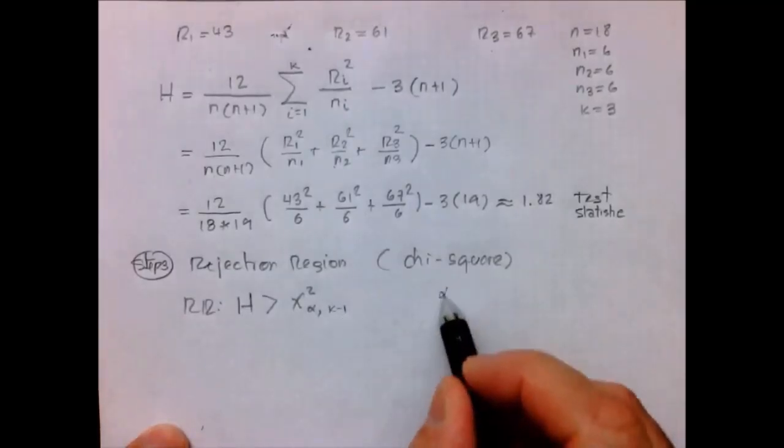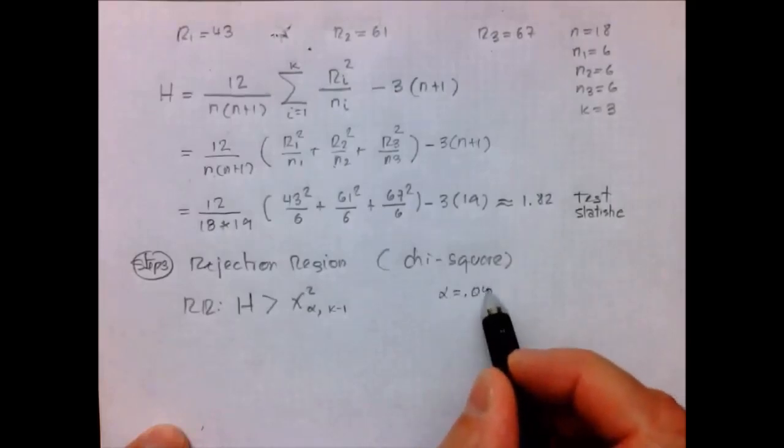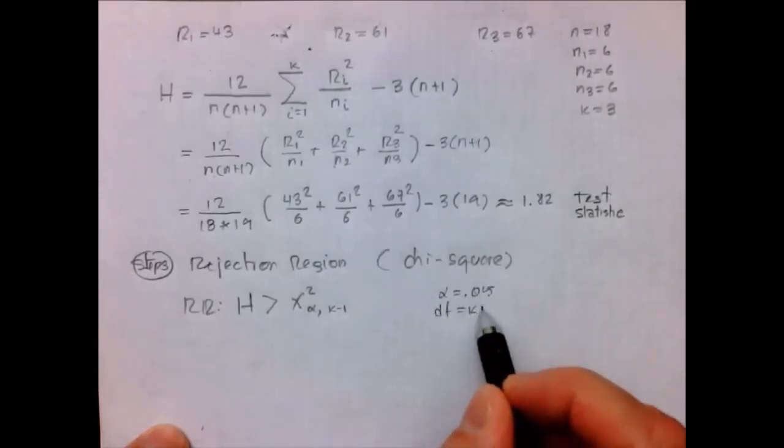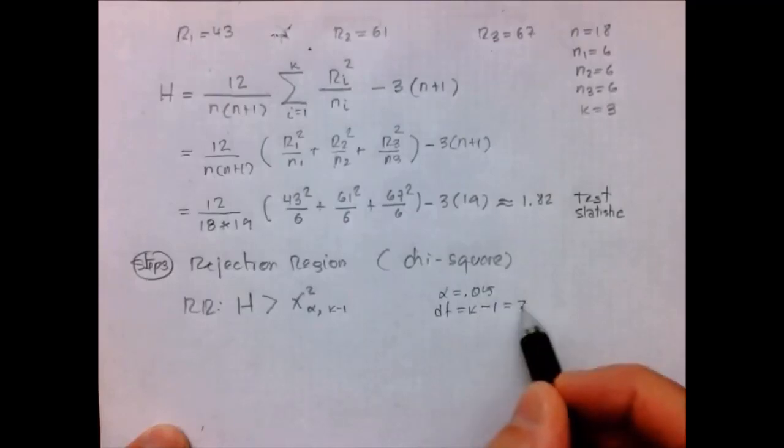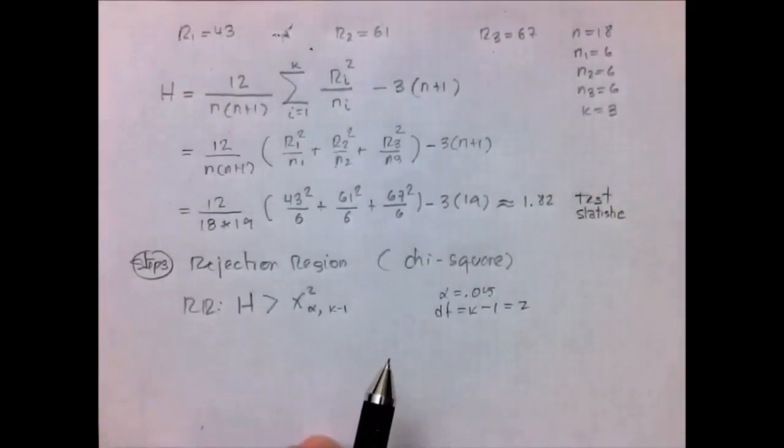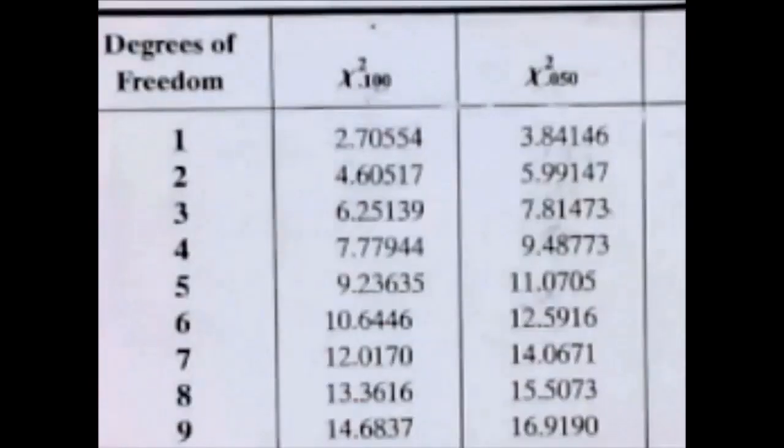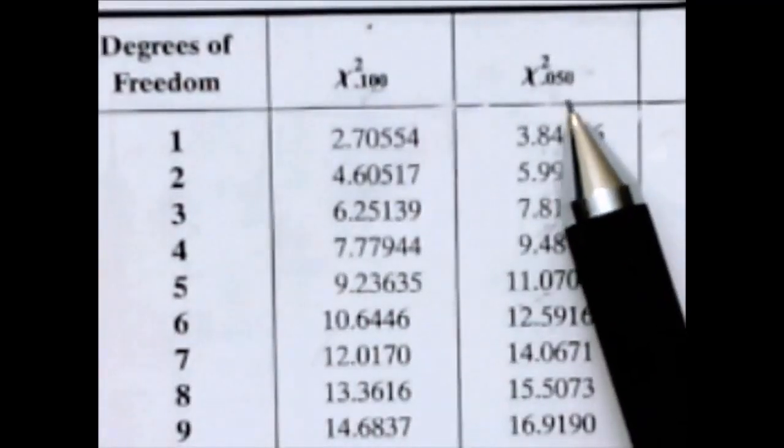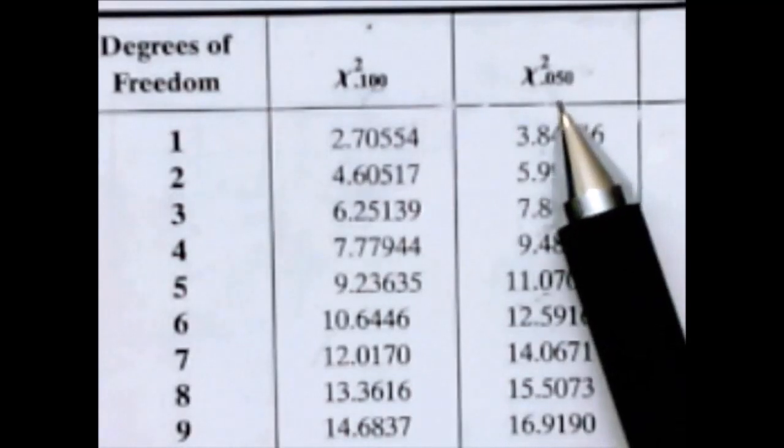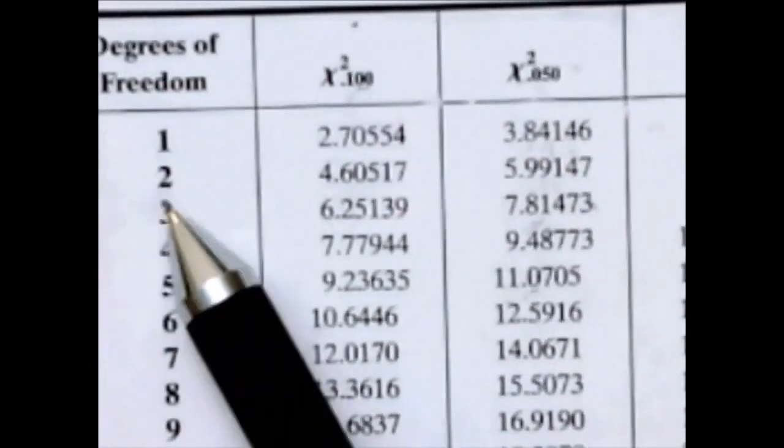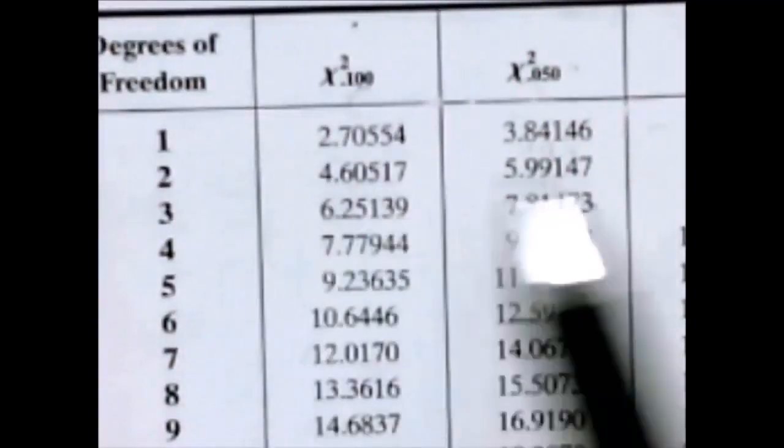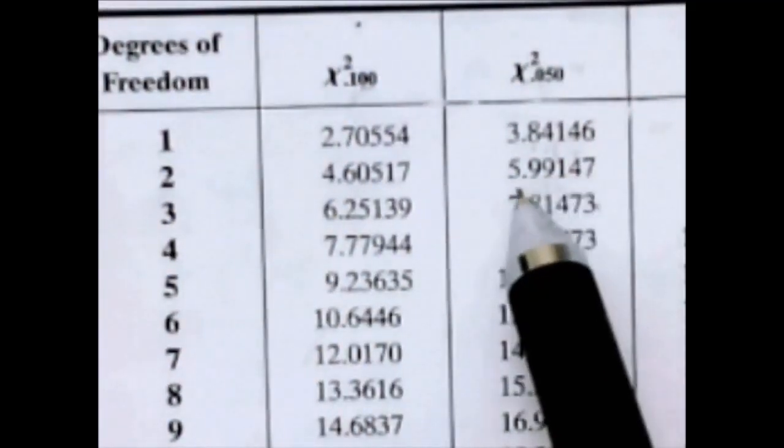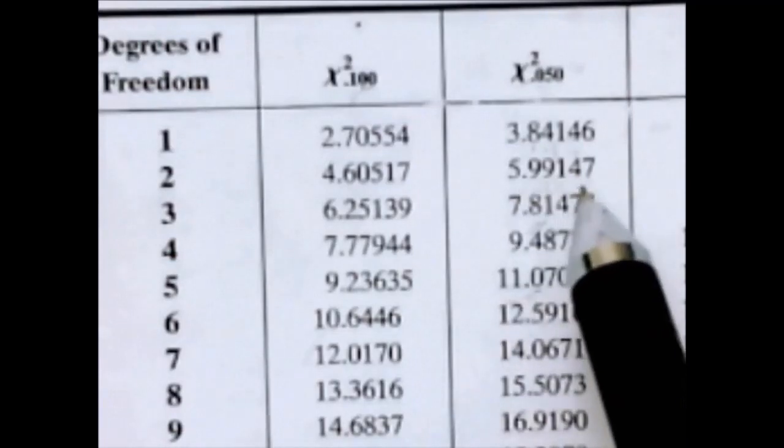So let's say that we are using alpha equals 0.05. And the degrees of freedom is going to be k minus 1, which is 2, because k is 3. So we are going to look this up in the chi-square table. In the chi-square table, what you have to do is look up the column for alpha equals 0.05, and the degrees of freedom tells you the row. So the critical value is going to be 5.99.